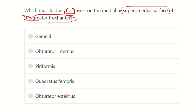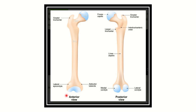Let's look at the greater trochanter first. Here you can see the femur — it has an upper end, lower end, and shaft. In the upper end there is a structure which is the greater trochanter. Here in the posterior view we can also see the greater trochanter and the lesser trochanter.